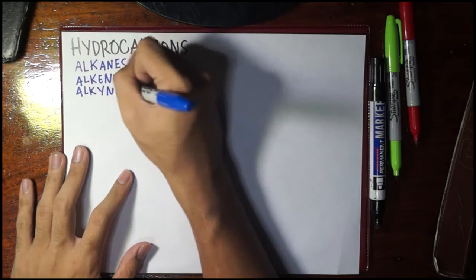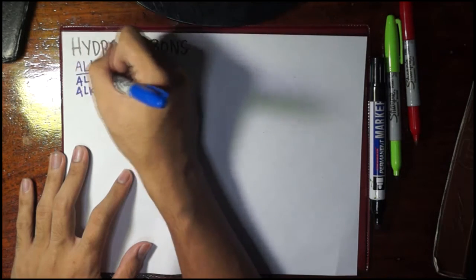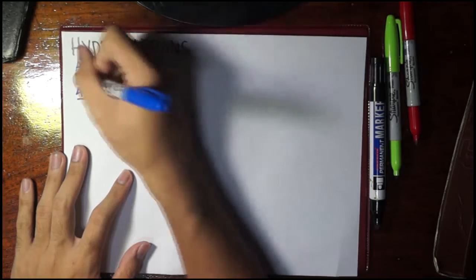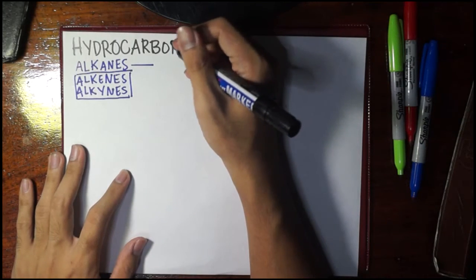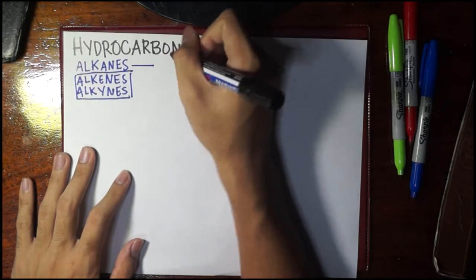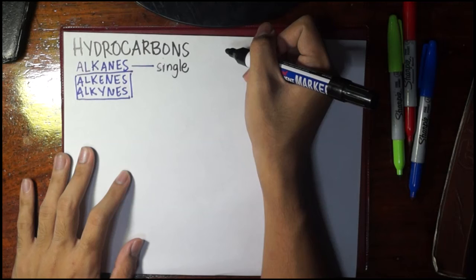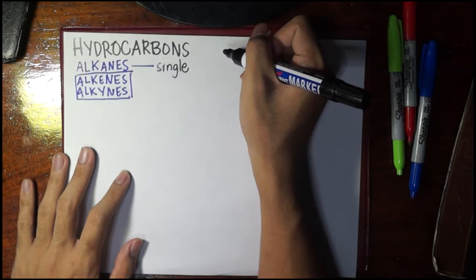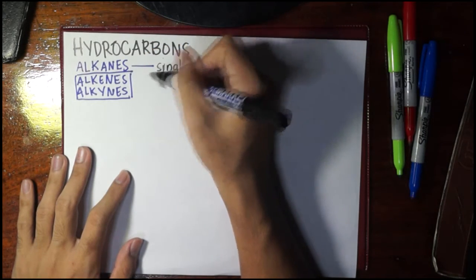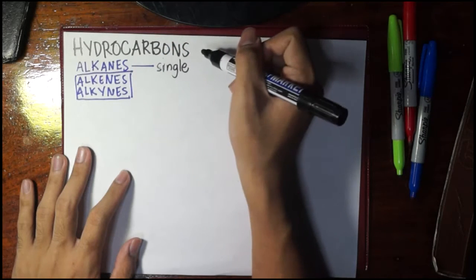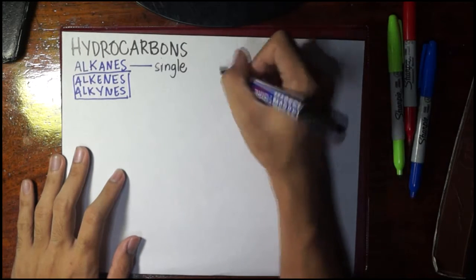The only difference among these three is a single letter. Let's focus on alkanes first. Alkanes are hydrocarbons wherein all carbon-to-carbon bonds are single bonds. The moment there is a double or triple bond, they would be classified as either an alkene, in the presence of a double bond, or an alkyne, in the presence of at least a triple bond.